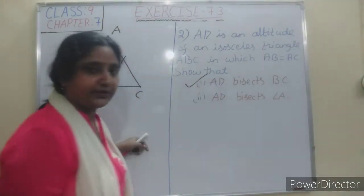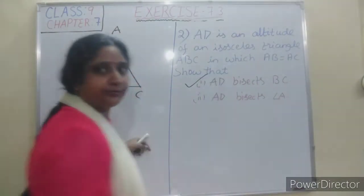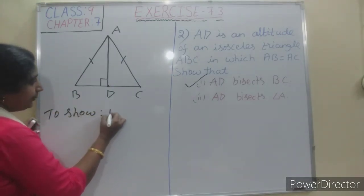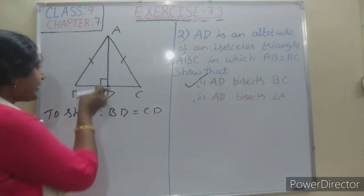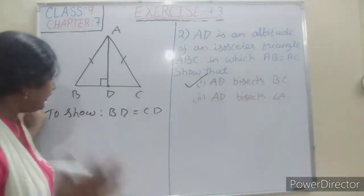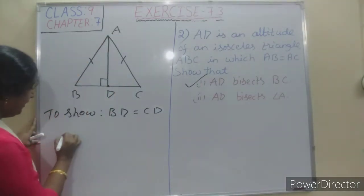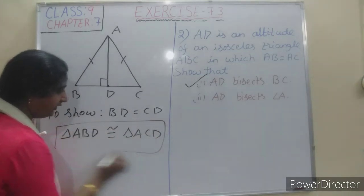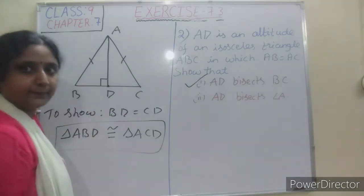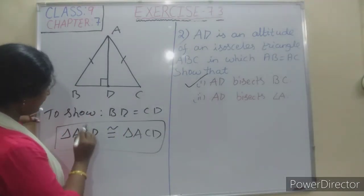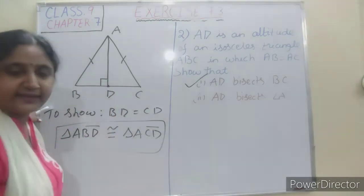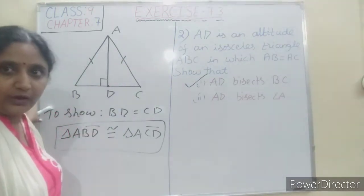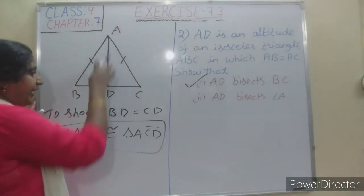First, we have to show that AD bisects BC, meaning BD equals CD. We can show this by proving triangle ABD is congruent to triangle ACD. When these two triangles are congruent, BD and CD are corresponding sides and therefore equal.